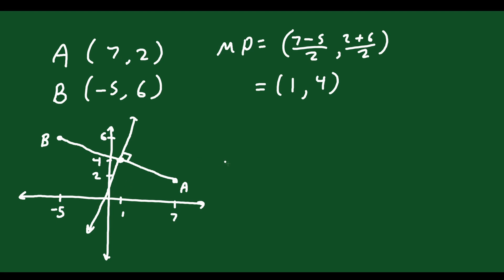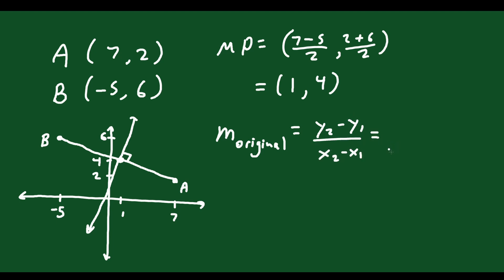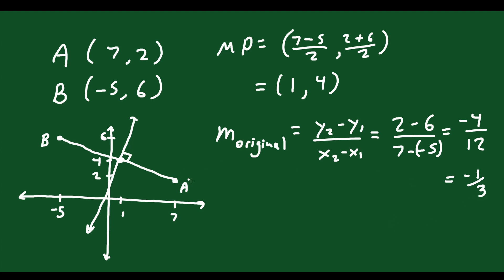Here's a key fact: if you have the slope of one line and another line meets it at 90 degrees, those two slopes are related. The slope of the original line AB uses rise over run: (y2 − y1) / (x2 − x1). That's (2 − 6) / (7 − (−5)) = −4 / 12, which simplifies to negative one-third. So the slope of the original line AB is −1/3.